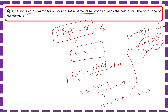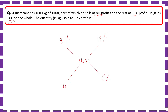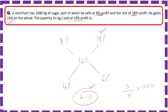A merchant has 1000 kg of sugar, part of which he sells at 8% profit and the rest at 18% profit. He gains 14% on the whole. The quantity sold at 18% profit is? Using the alligation method: difference from 14%: 8% gives 6 parts, 18% gives 4 parts — wait, difference is 14−8=6 and 18−14=4, ratio = 6:4 = 3:2. Quantity at 18% = 3/5 × 1000 = 600 kg.